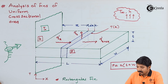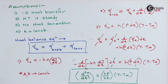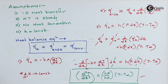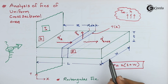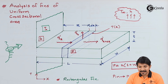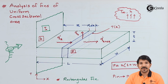Instead of a rectangular fin, if we consider a taper fin, then A cannot be treated as constant, so A stays inside and the differential equation requires further solving — one more partial differential term is added. Similarly, for a pin fin, the perimeter changes: for a circular pin fin, the perimeter is 2πr or πd, where d is the diameter of the small pin itself. That is the analysis of the fin of uniform cross section area.